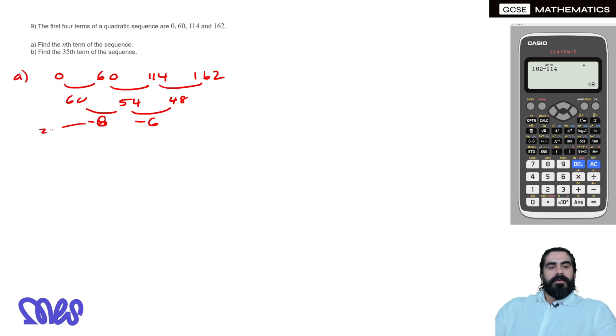So remember that is 2A, that is 3A plus B, and that is A plus B plus C. So 2A is minus 6, divide both sides by 2, we get A is minus 3. Then 3A, A is minus 3 plus B is 60. So we get minus 9 plus B equals 60. Then we add the 9 over to the other side. 60 plus 9 is 69.